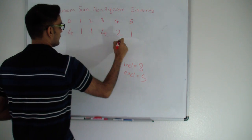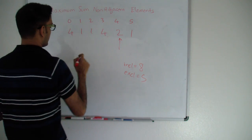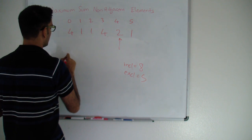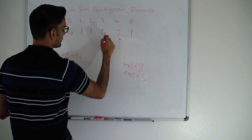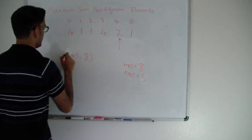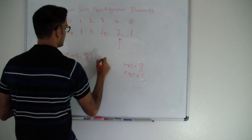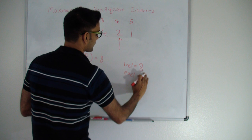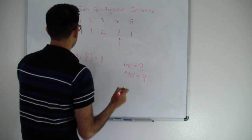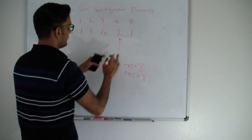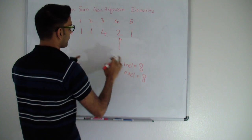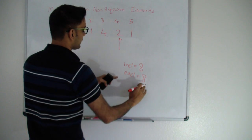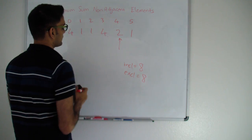Now let's include the next element, 2. My new inclusive is max(old exclusive + 2, old inclusive) = max(5+2, 8) = max(7, 8) = 8. My new exclusive becomes the old inclusive which is 8. So including this 2, the best I can do is still 8 (4+4), and excluding it the best I can do is also 8.